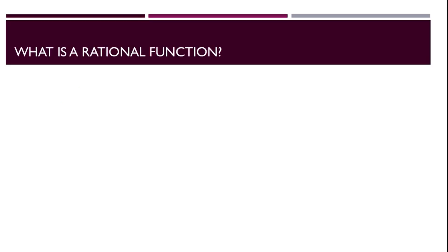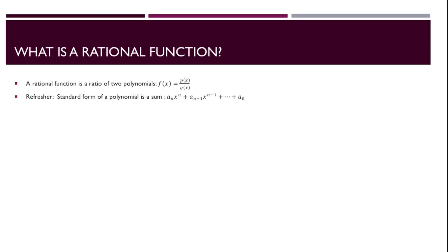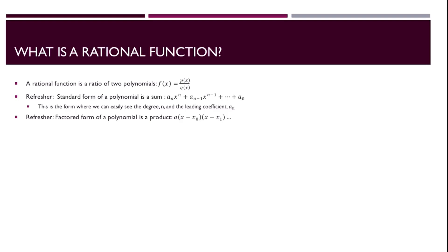Let's look at what a rational function is. A rational function is a ratio of two polynomials, frequently called p and q. The standard form of a polynomial is a sum of powers of x with coefficients that are real numbers — this is the form where we can easily see the degree n and the leading coefficient a sub n. The factored form of a polynomial is a product: a times x minus x naught times x minus x sub 1, and so on. This is the form where we can easily see the zeros.